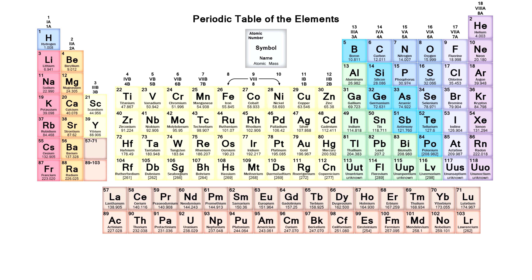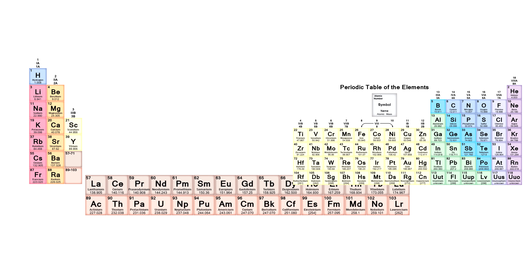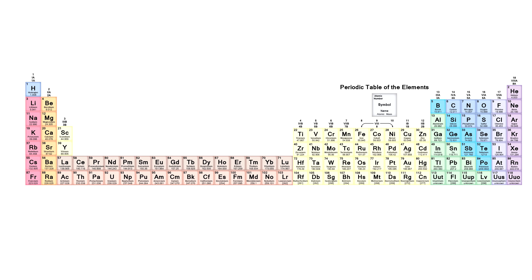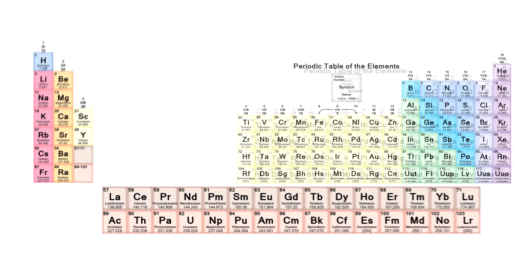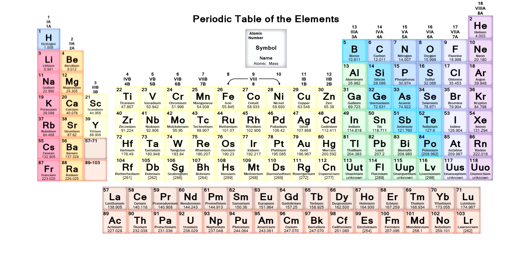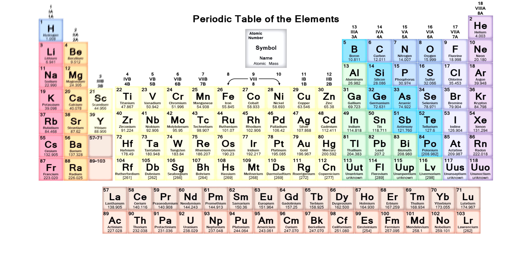Actually, the periodic system of chemical elements should look two times longer than it currently is. However, as it turns out, that is not the most compact way of showcasing elements, so the lanthanides and actinides were moved a bit down.